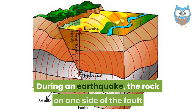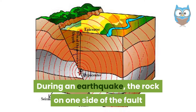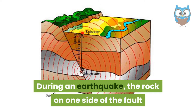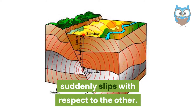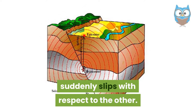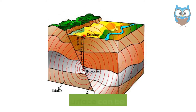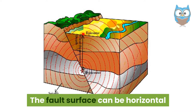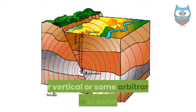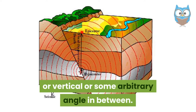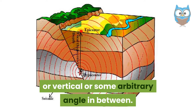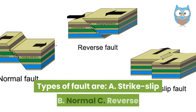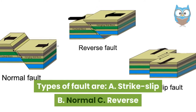During an earthquake, the rock on one side of the fault suddenly slips with respect to the other. The fault surface can be horizontal, vertical, or at some arbitrary angle in between.